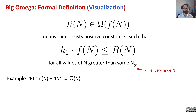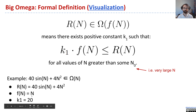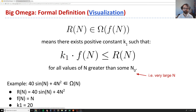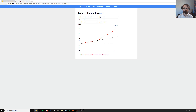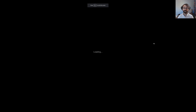If we take our running example from the big O definition — the function 40 sine n plus 4n squared — we can say that that's big omega n. It grows at least as quickly as n. Here's our function r of n, here's f of n which is just n in this case, and k1 is 20, though it doesn't actually matter what k you pick. In the picture, our red line is r of n, and for sufficiently large n, that function r of n gets much bigger than k times f of n. That line is pathetically tiny compared to our function. Therefore, it is big omega of n — it grows at least as fast as a line. In this case, it's a quadratic plus some sine stuff.